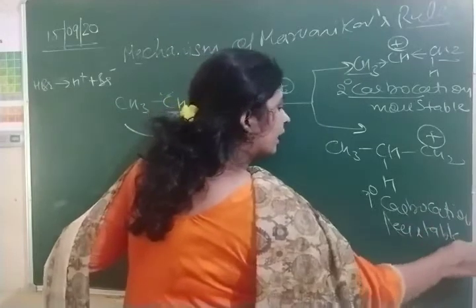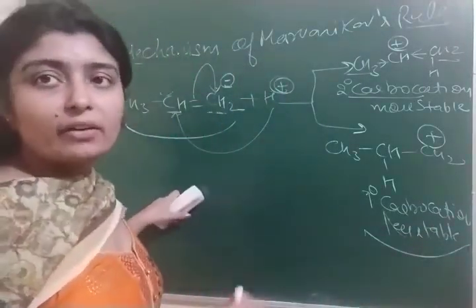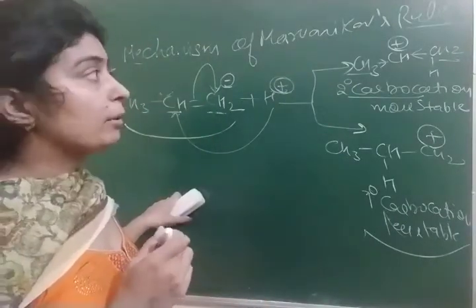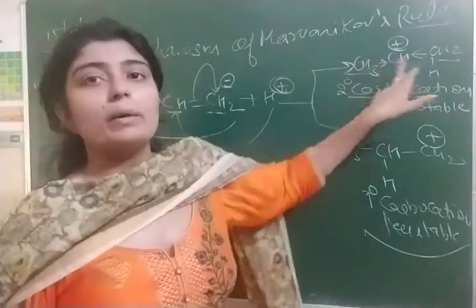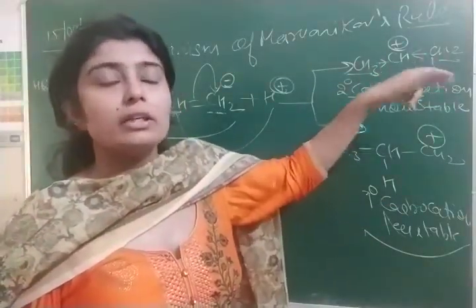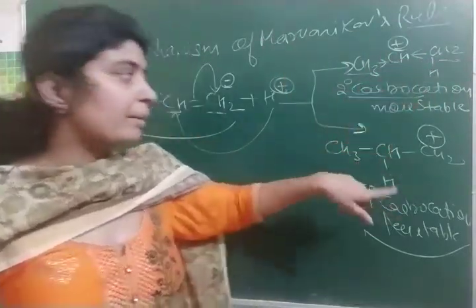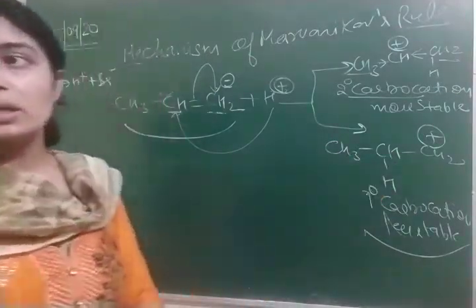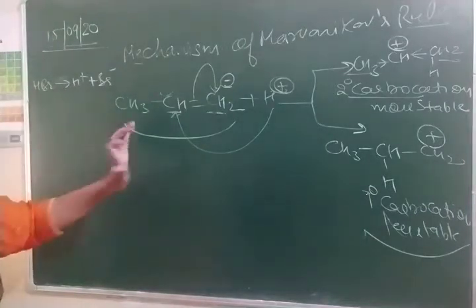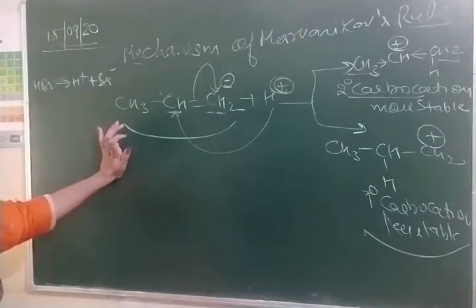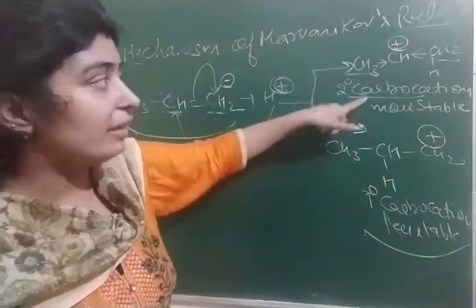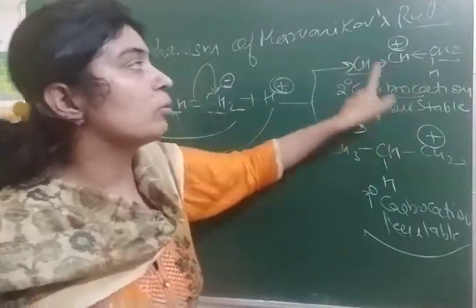We have already told that the secondary carbocation is more stable than the primary. So secondary carbocation is more stable because in the secondary carbocation, two alkyl groups are present which donate electrons to the carbocation and make it stable, as compared to the primary carbocation where only a single alkyl group is attached. So the carbocation formed with a larger number of alkyl groups — the secondary carbocation — is more stable compared to the primary carbocation.